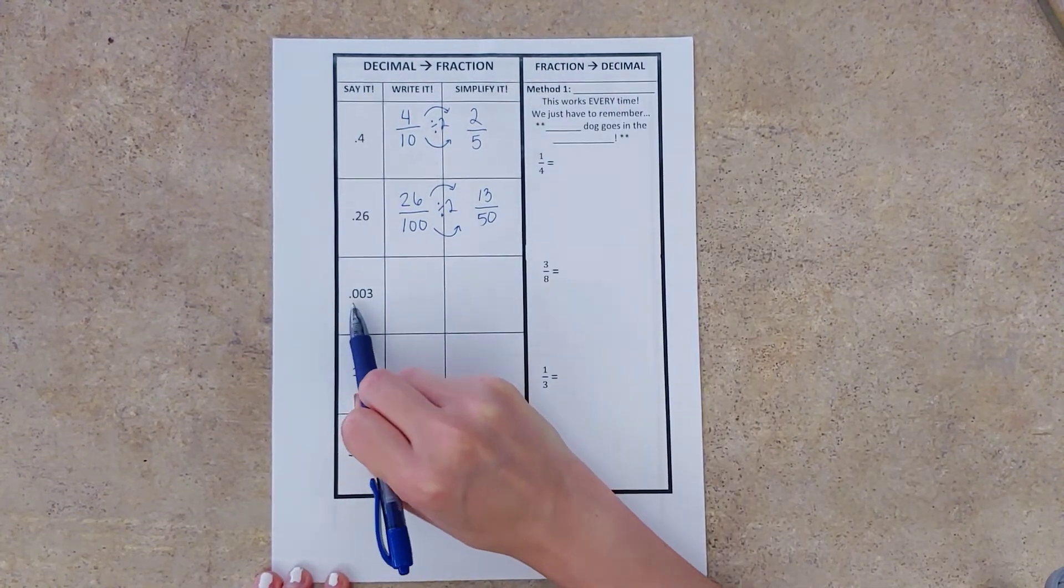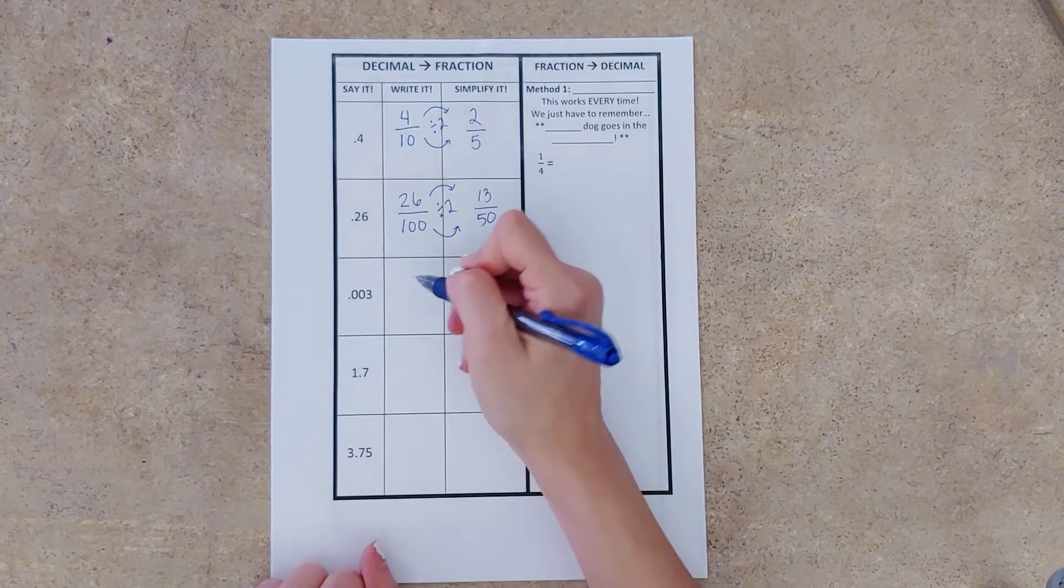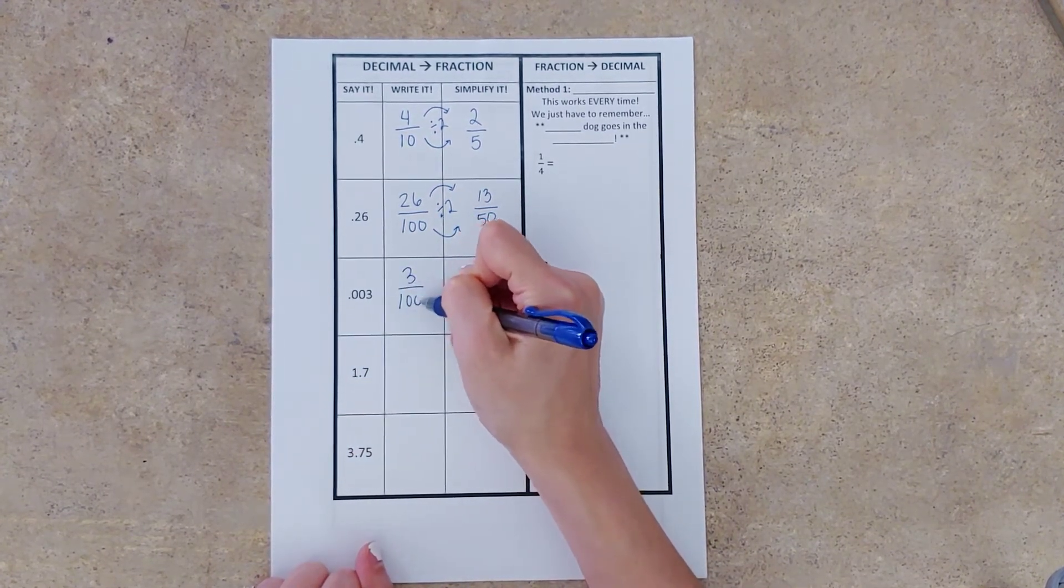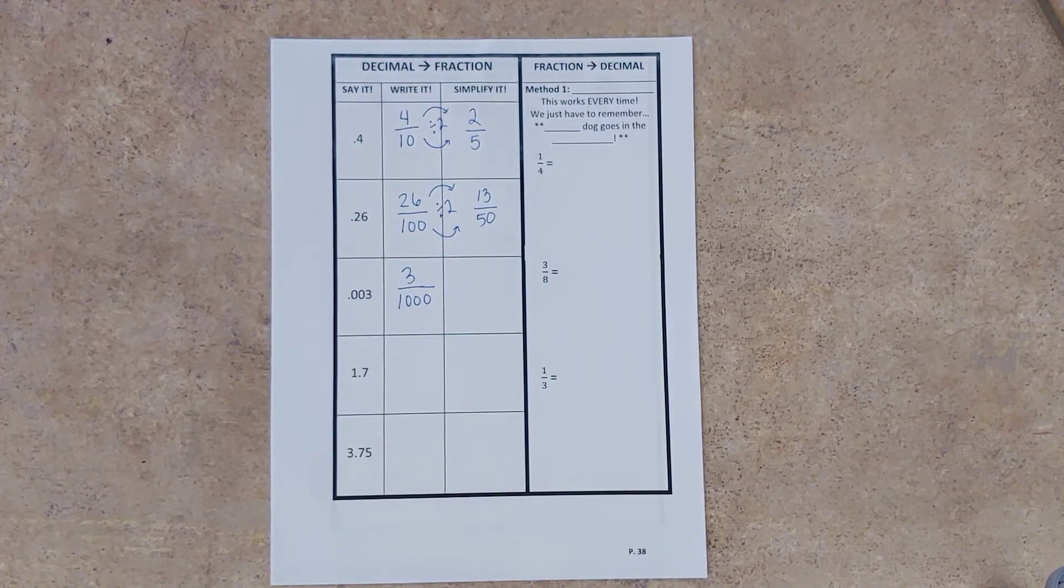All right, same thing for our next one. Three tenths, hundredths, thousandths. Three thousandths. Three out of one thousand. And this one, there isn't anything for us to simplify by. So it's already in its simplest terms as three over one thousand.